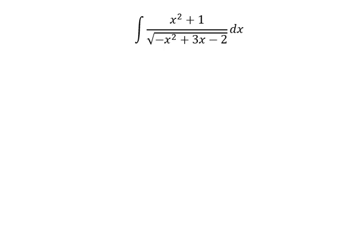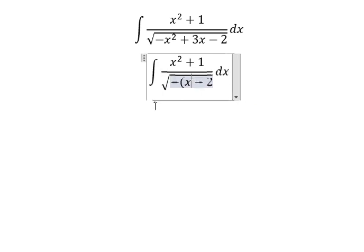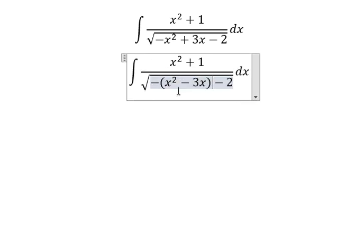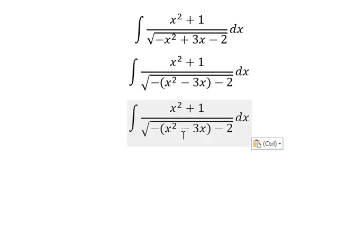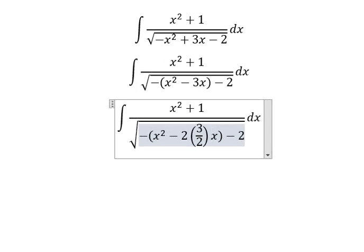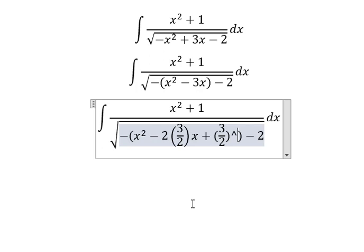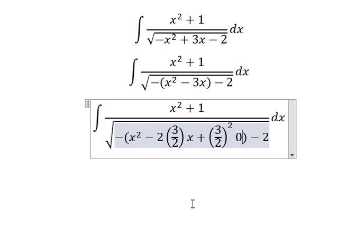Hello everybody. Today I want to show you how to answer this one using factorization. We have a negative number, then number three, and about number two multiplied by three over two. That means we need to add about three over two to the power of two.